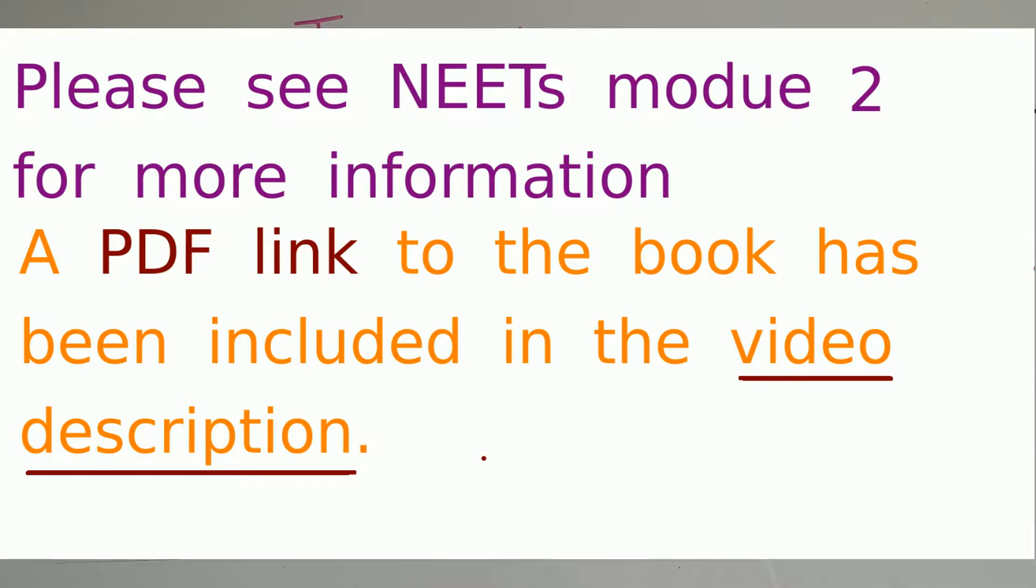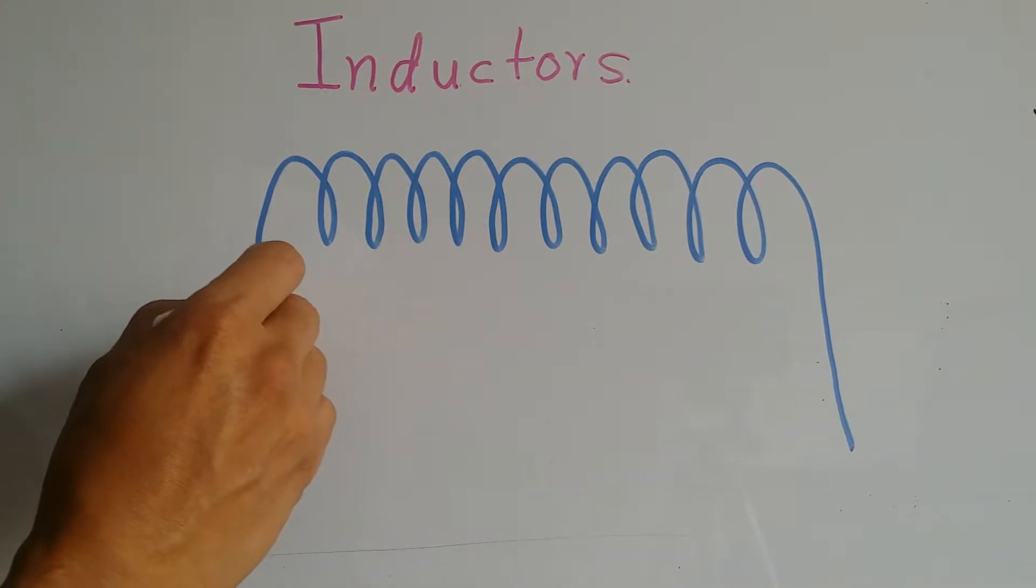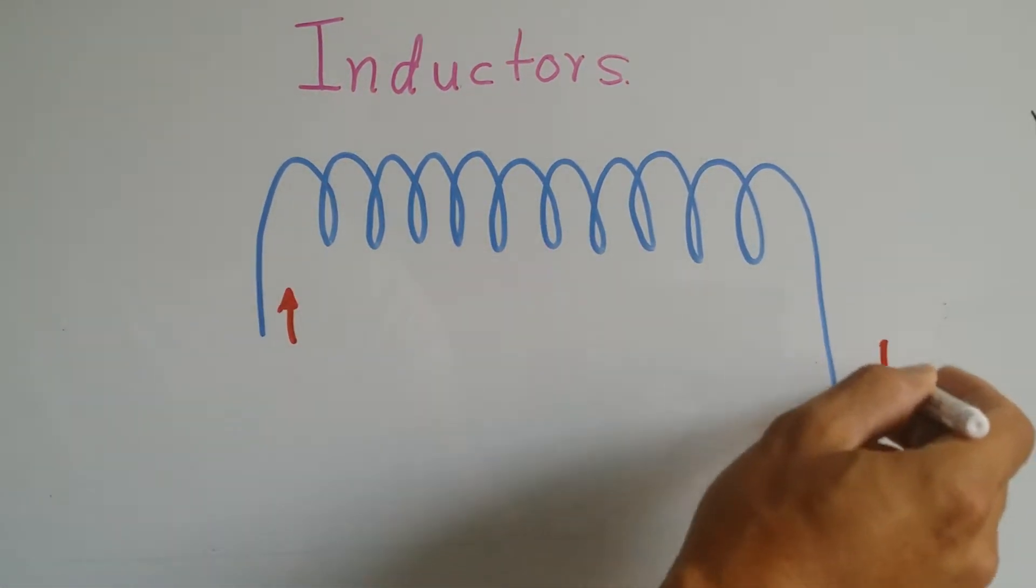In previous videos I spoke about inductors, that they are just a piece of wire that is coiled. I also spoke that when you have electron flow on a wire, it creates a magnetic field.